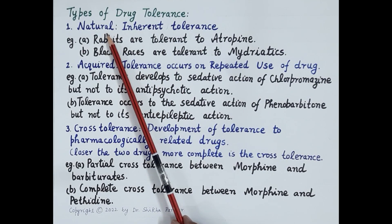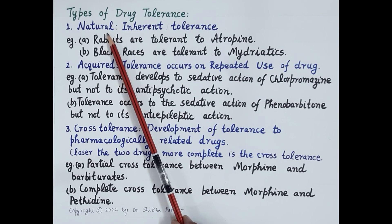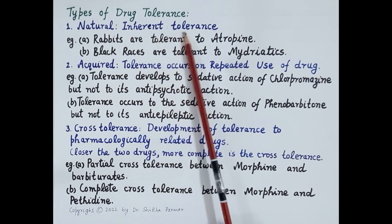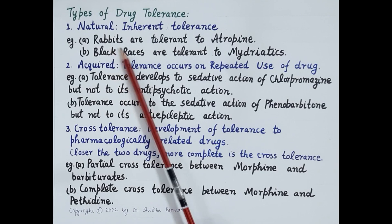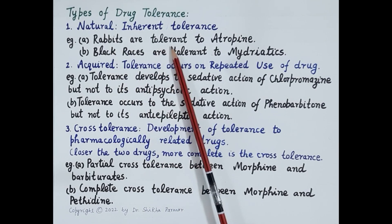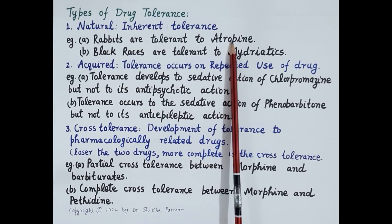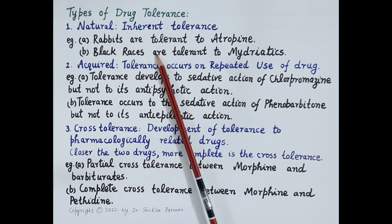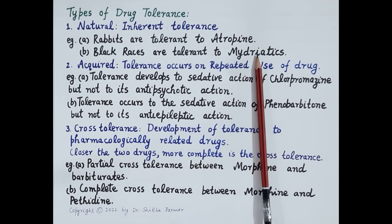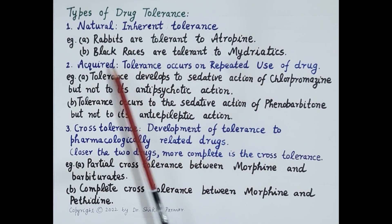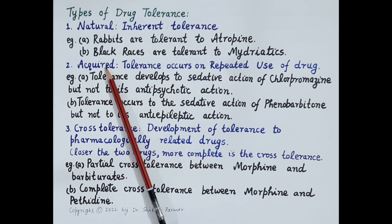The first type of drug tolerance is natural tolerance, where the species or individual is inherently less sensitive to a drug. Natural tolerance is genetic or inherent tolerance. For example, rabbits are naturally tolerant to atropine, and black races are inherently tolerant to mydriatics.